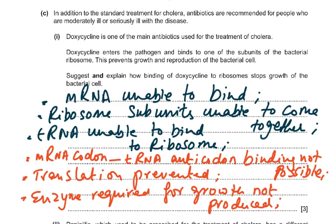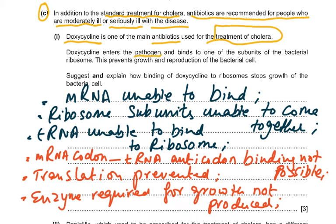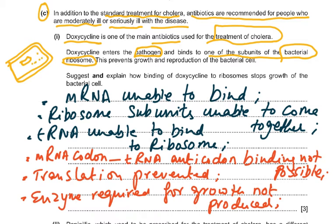Part C of the question: in addition to standard treatment, antibiotics are recommended for people who are moderately or seriously ill with cholera. Doxycycline — also called vibramycin — is one of the main antibiotics used for cholera treatment. Doxycycline enters the pathogen and binds to one of the subunits of the bacterial ribosome, which prevents growth and reproduction of the bacterial cell, helping the patient to recover.